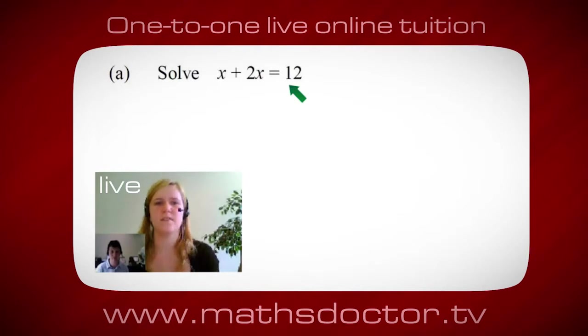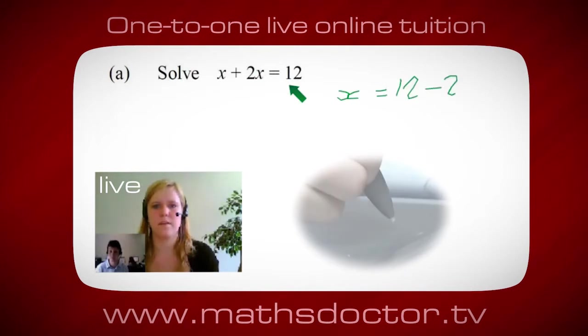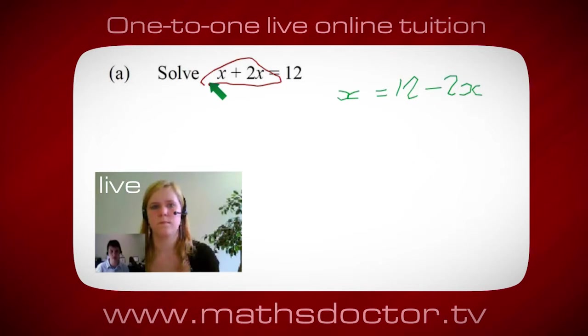Okay, well I want x on its own so I would put x equals 12 minus 2x. Okay, so a lot of the time we want to get x by itself, but what we want to do first is get all of these x's together. So can you see anything we can do with this to get all these together in one place?